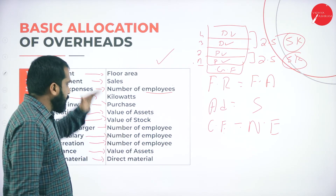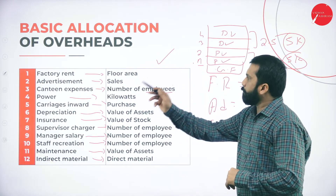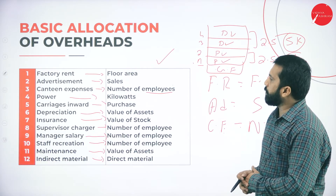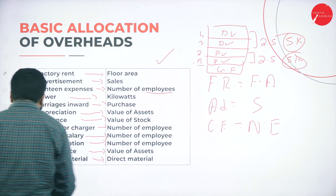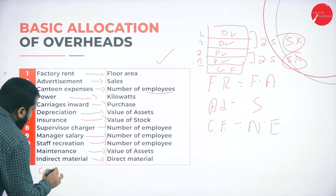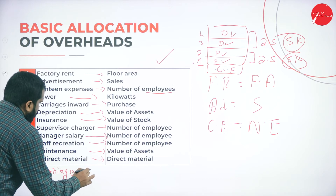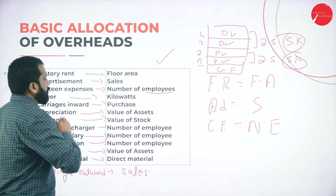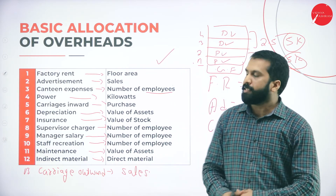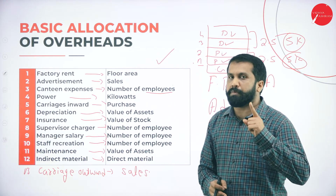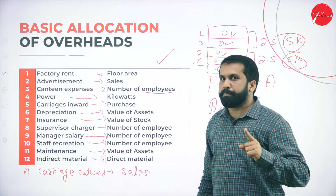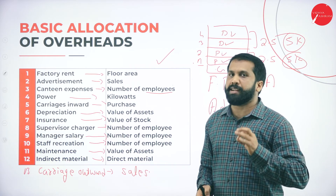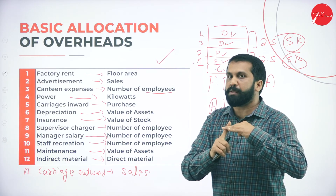Hope you are clear. These are the calculations you are supposed to remember: factory rent on floor area, advertisement on sales, canteen on number of employees, power on kilowatts, carriage inward on purchases. One more to add: carriage outward is on the basis of sales, whereas carriage inward is on the basis of purchases. These are the things you are supposed to remember — not only for solving problems, but this chart is very important for your 5-mark theory as well as your 15-mark problem.